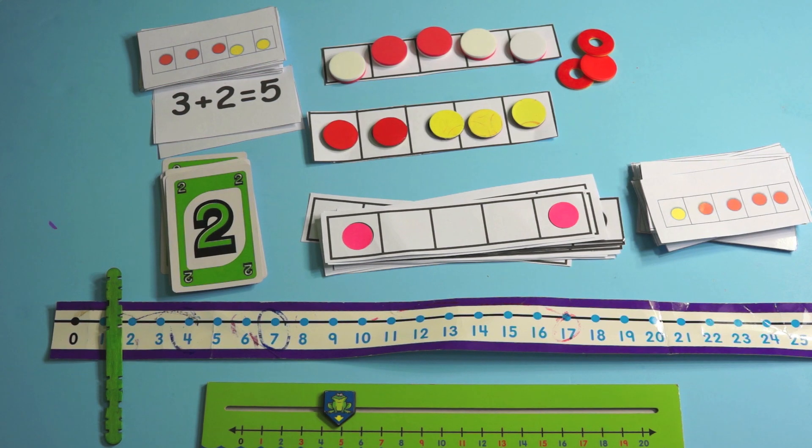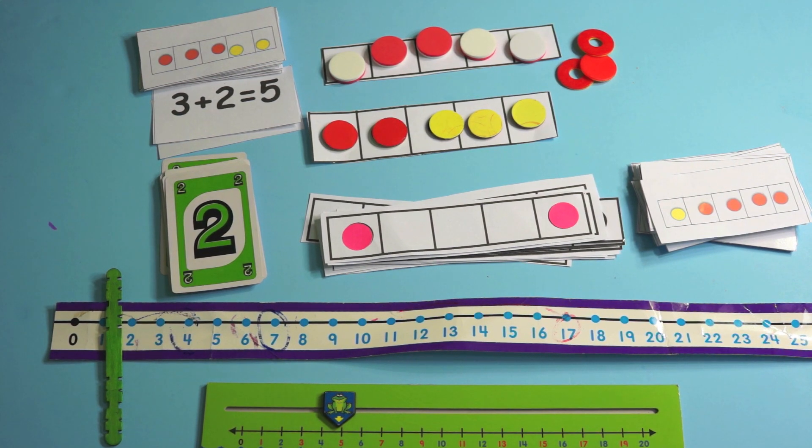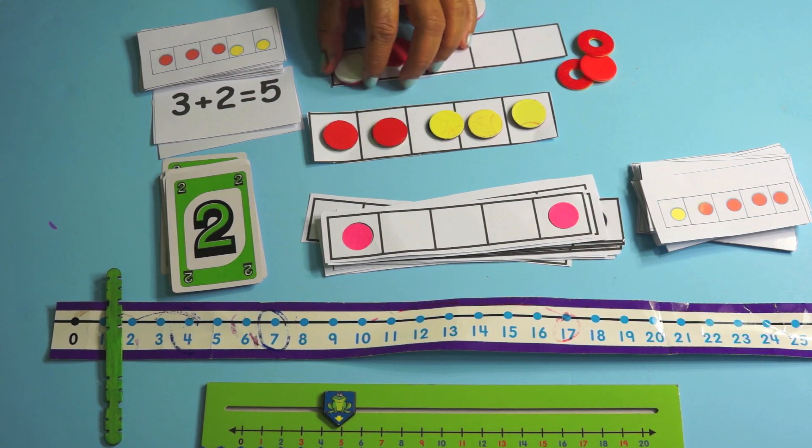Five frames are the linchpin of fluency for kindergarten. Fluency is through five and so a five frame does exactly that.